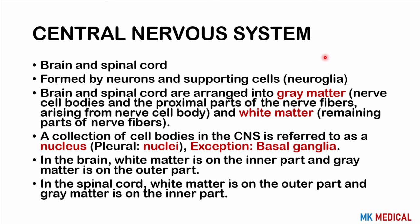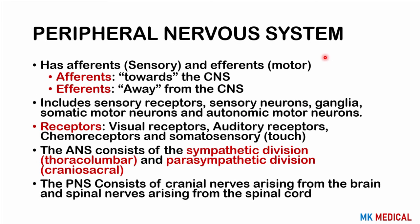The peripheral nervous system has a sensory (afferent) component taking information towards the CNS, and an efferent (motor) component taking information away from the CNS. This includes sensory receptors — visual receptors (photoreceptors in the eye), auditory receptors (hair cells in the inner ear), chemoreceptors (on the tongue), and somatosensory receptors (on the skin). Sensory neurons carry information from these receptors to the central nervous system.